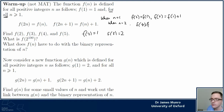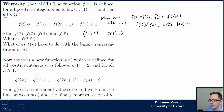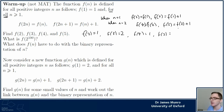So f(4) equals f(2), which is 1, and f(5) is f(2) plus 1, which is 1 plus 1, equals 2.